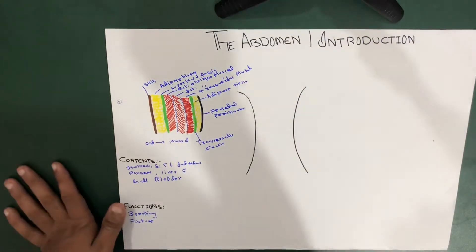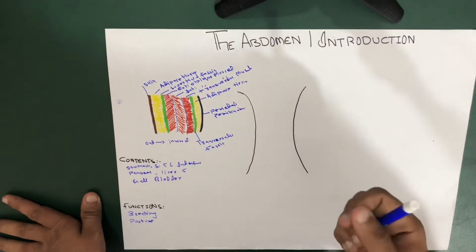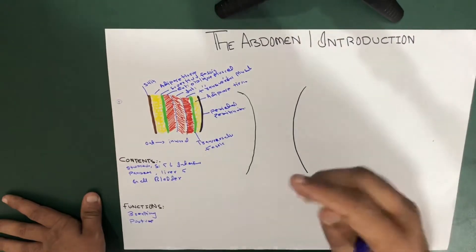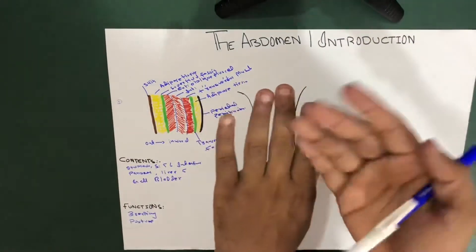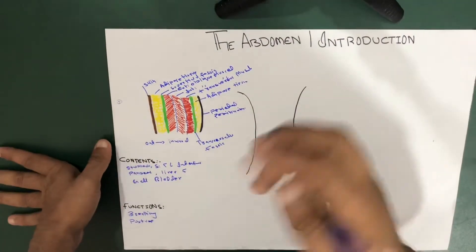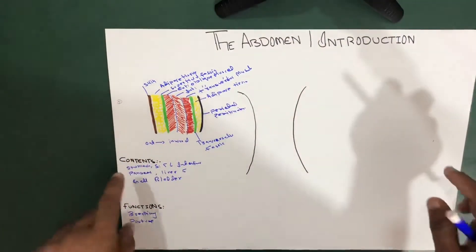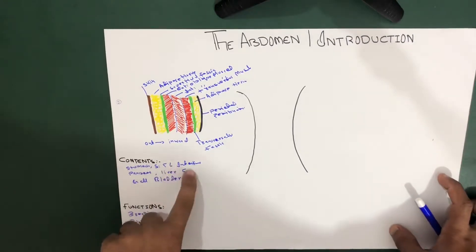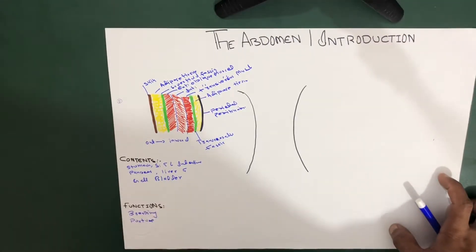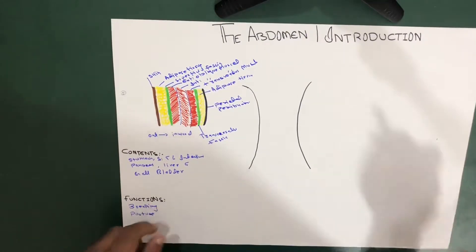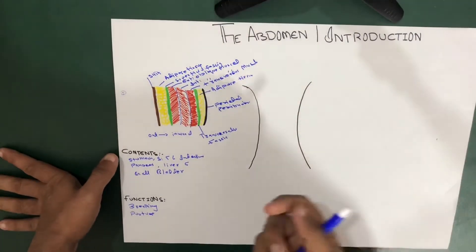Now let's talk about the contents. All the digestive organs are present in the abdominal region. These organs are held together loosely by connective tissue that allows them to expand and slide against each other. The main contents — the structures present in the abdomen — are the stomach, small and large intestine, pancreas, liver, and gallbladder. One thing missing here is the kidney; you should add the kidney and a few other structures that are also included in the contents.